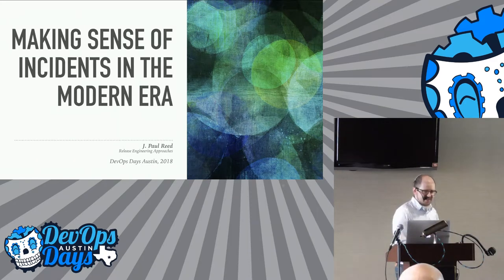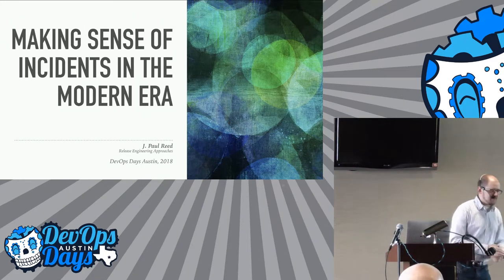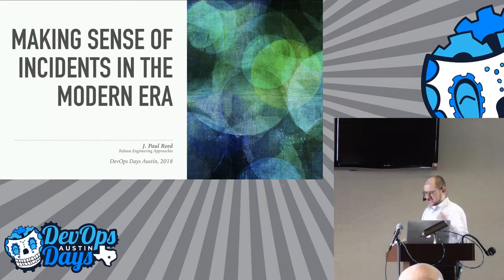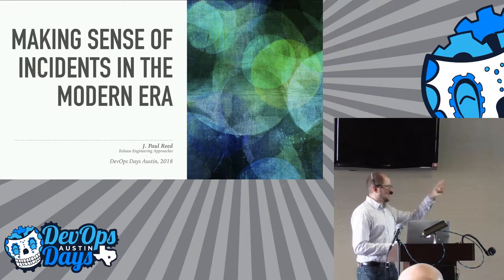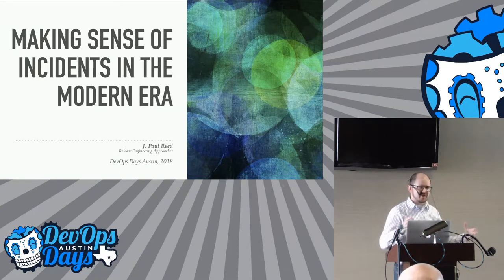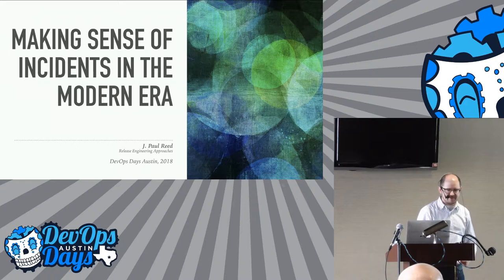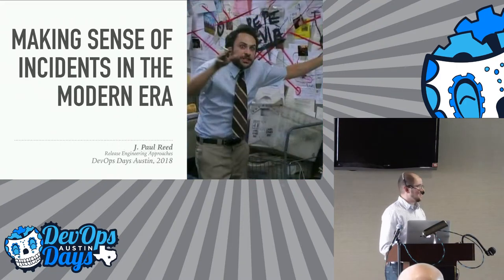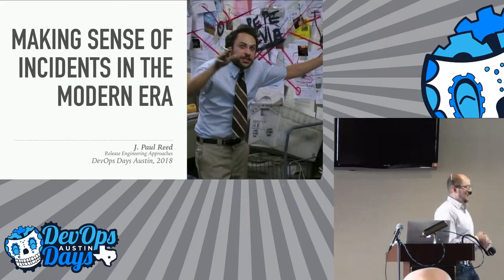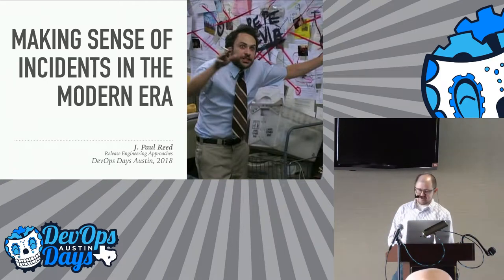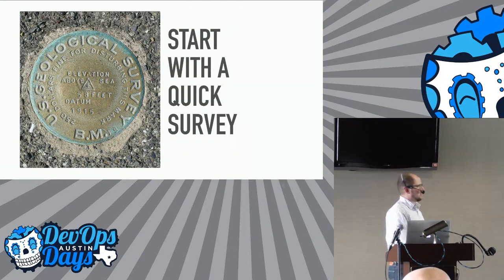This is 'Making Sense of Incidents in the Modern Era.' I was trying to come up with a picture for the title slide and ended up going with a nice 'how do we think about these problems' sort of slide. Then I realized for some of us this might be a better picture for how we make sense of our incidents.